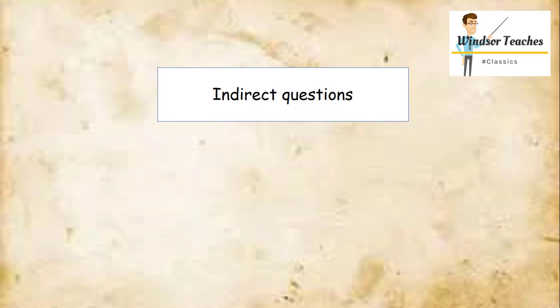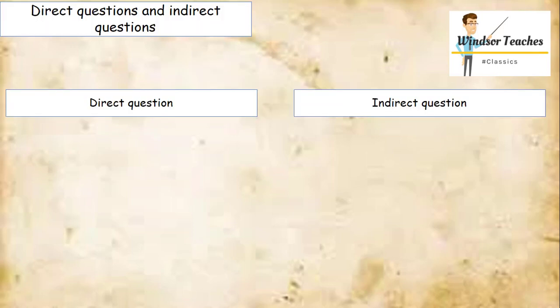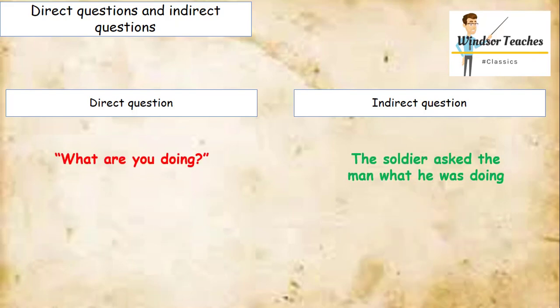So first of all, what's the difference between indirect and direct questions? If you have a direct question, you might say something like, what are you doing? And the indirect question might go with that, is the soldier asked the man what he was doing. Another direct question might be, who are you? And the indirect question associated with that direct question might be, the slave asked who he was.